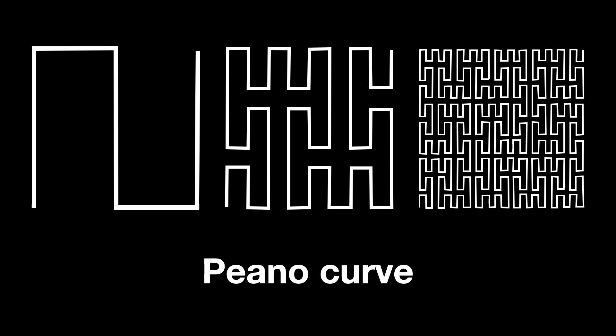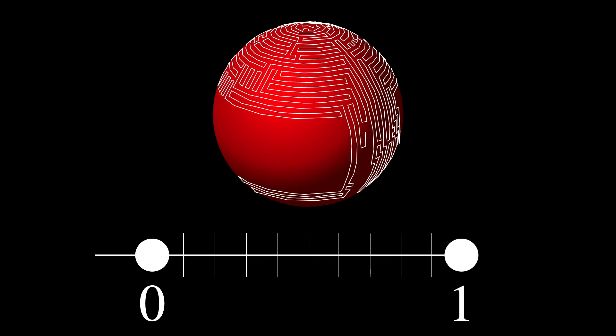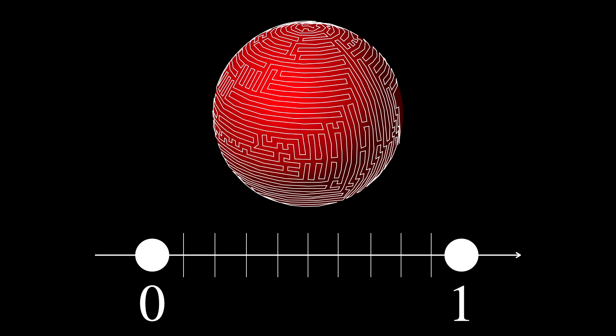Like this Peano curve, first discovered by Giuseppe Peano in 1890, which is a continuous curve that passes through every point of a square. In a sphere, you could theoretically design a continuous function that maps every number in the interval 0, 1 to a distinct point on the sphere's surface. Such a function would effectively unfold the one-dimensional line into a two-dimensional surface in a continuous, smooth manner.